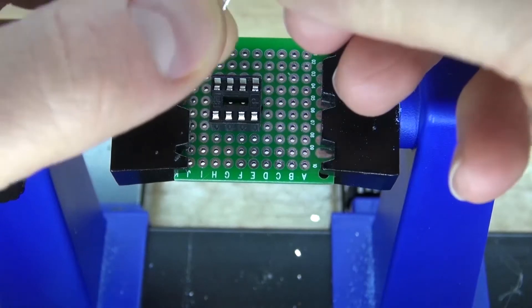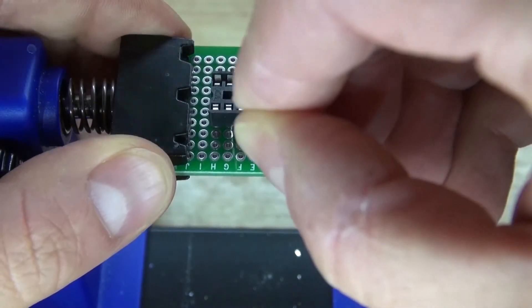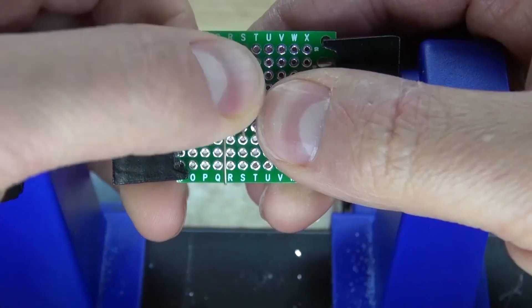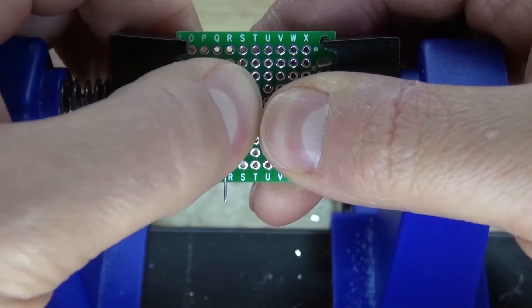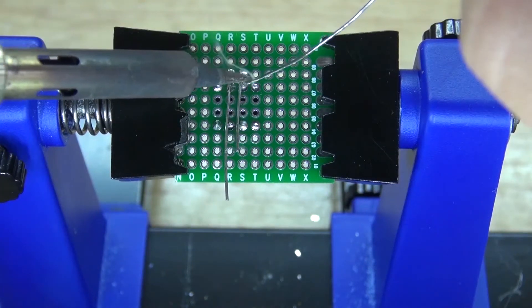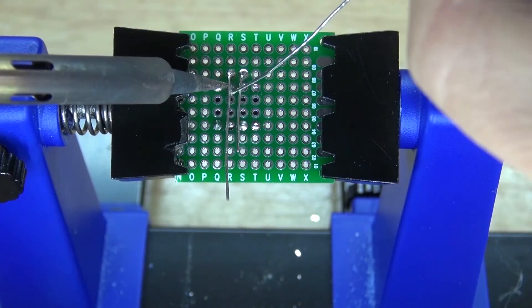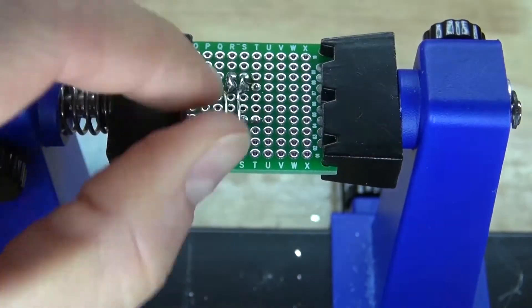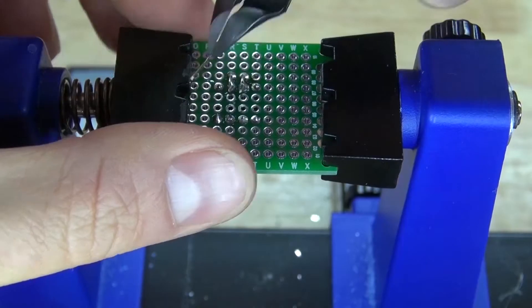Next you're going to need to take your 220 ohm resistor and place it onto pin 2 and 3. Bend the leads over. Solder bridge it together. Cut off the leads and it should look just like this.